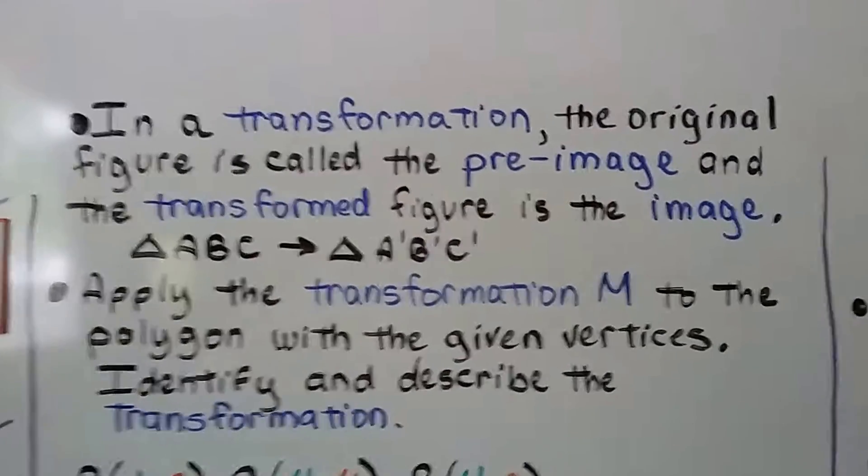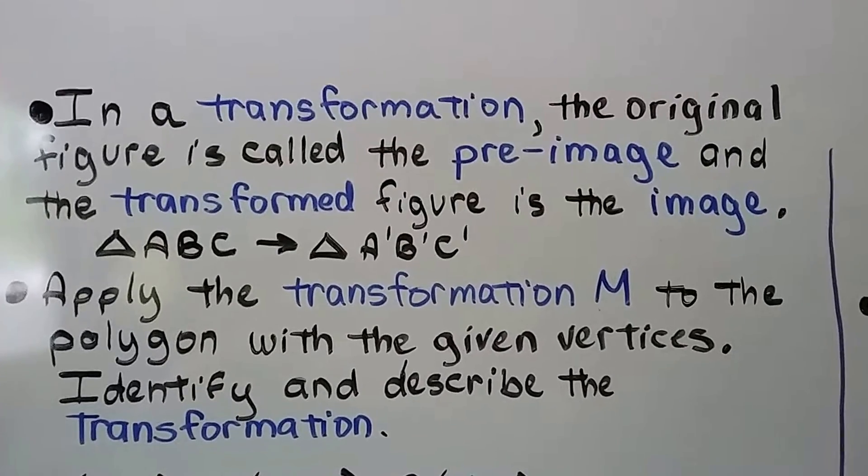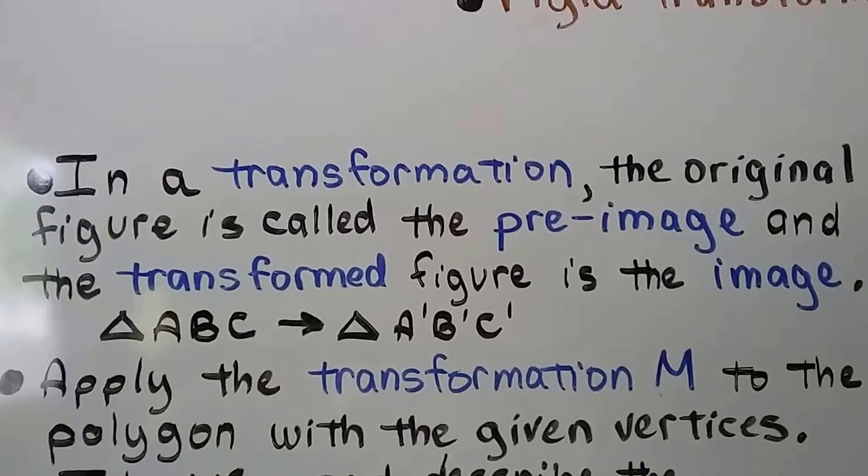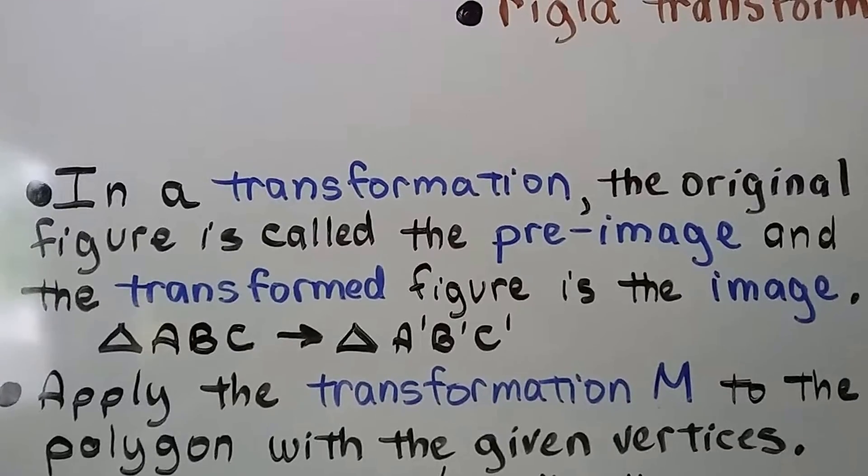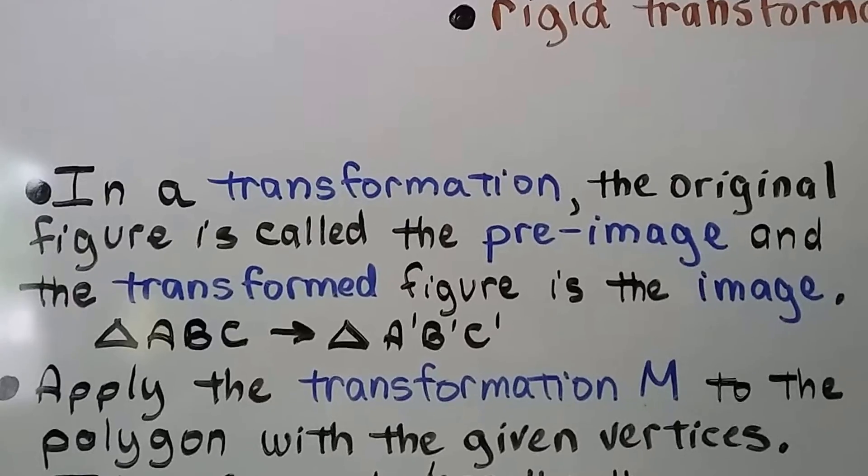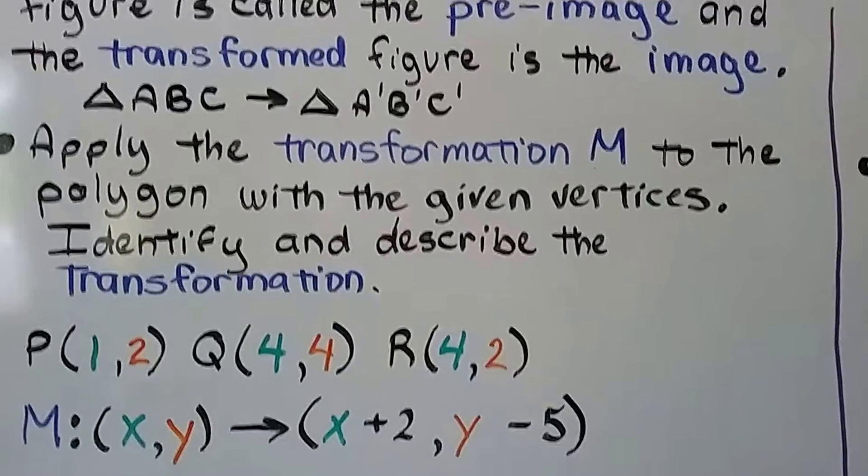In a transformation, the original figure is called the pre-image, and the transformed figure is the image. So if we have triangle ABC, it maps to triangle A', B', C'. When you see the little tick marks after the letters, we say prime, and it tells us that's the image. That's the second figure.